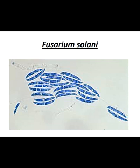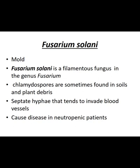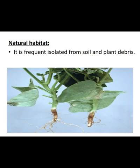Now, Fusarium — specifically Fusarium solani — has a crescent shape. It is a mold, a filamentous fungus. Chlamydospores are sometimes found in soil and plant debris. The septate hyphae tend to invade blood vessels — that is important. These hyphae of Fusarium solani invade blood vessels and cause disease in neutropenic patients. Its natural habitat is soil and plant debris.